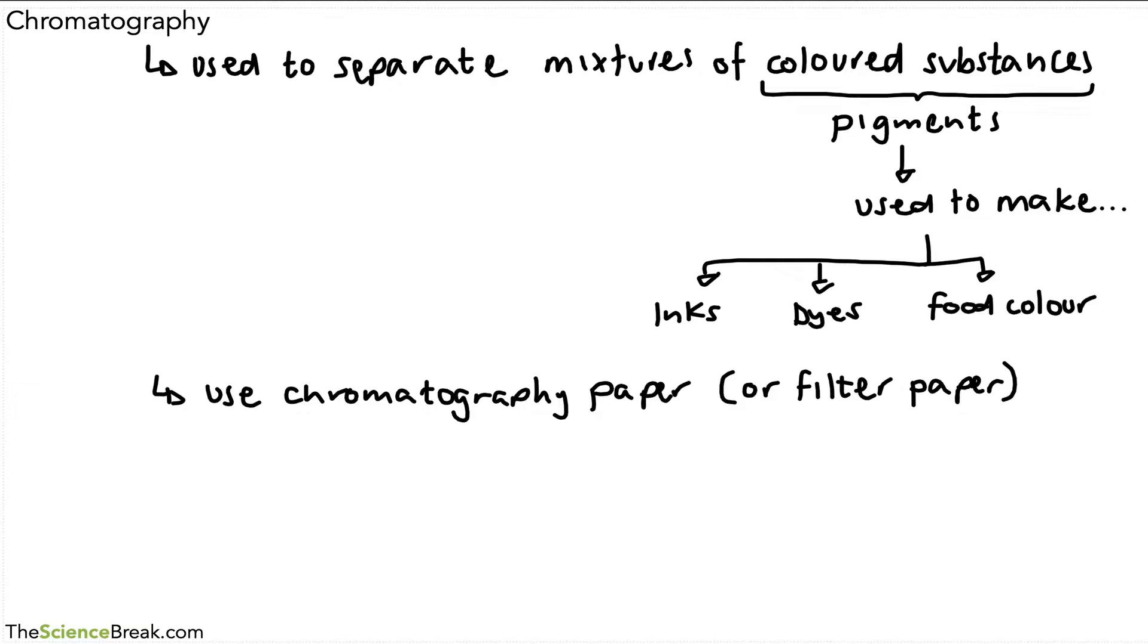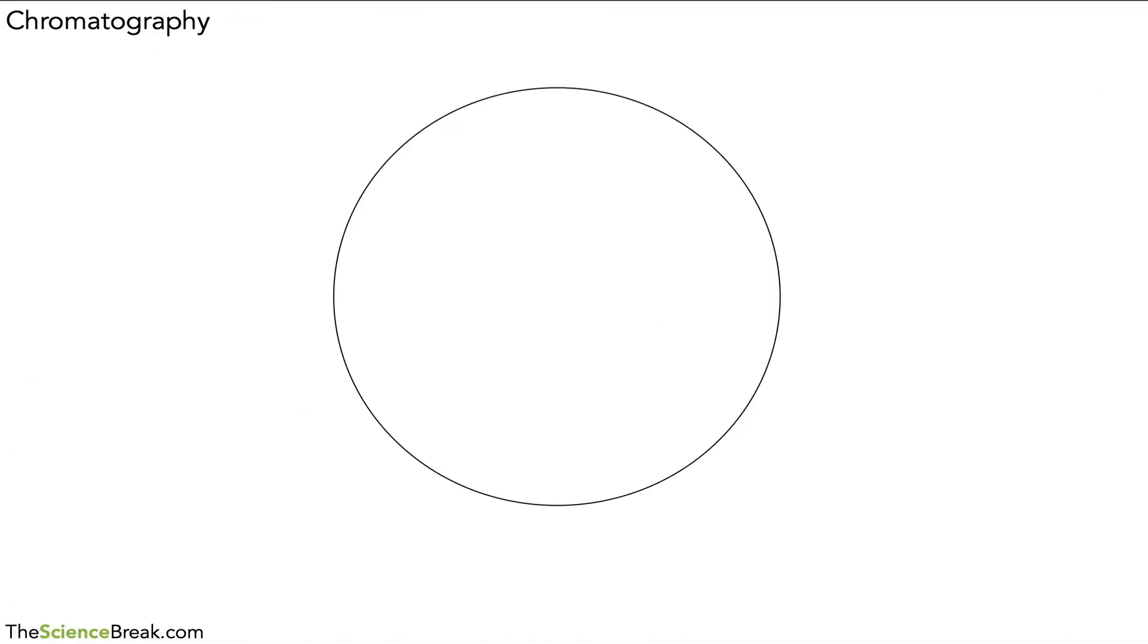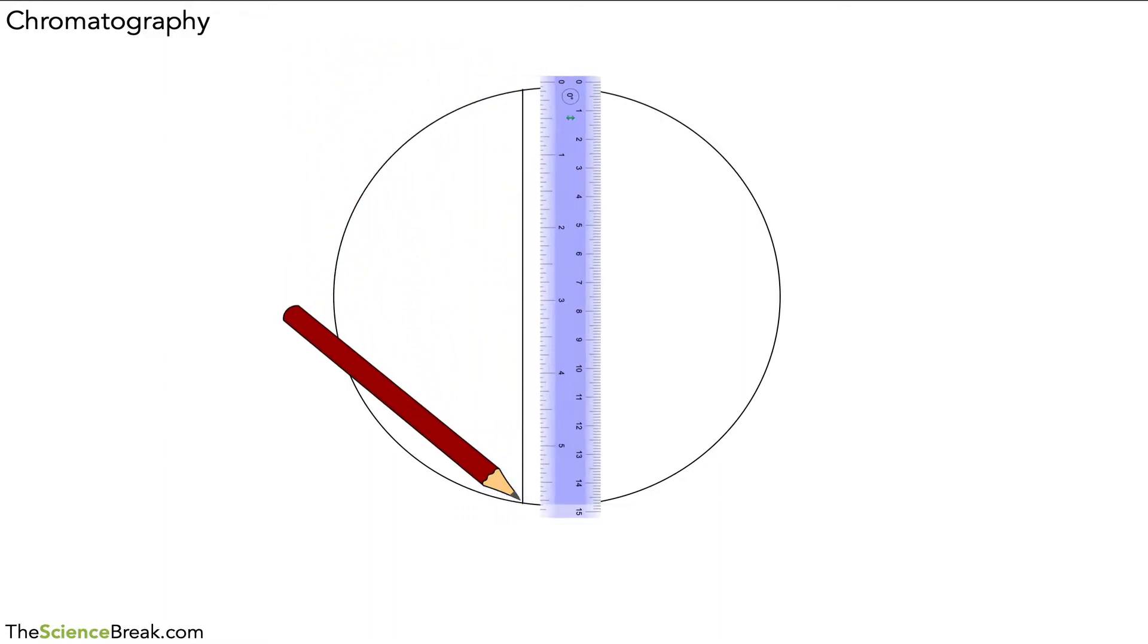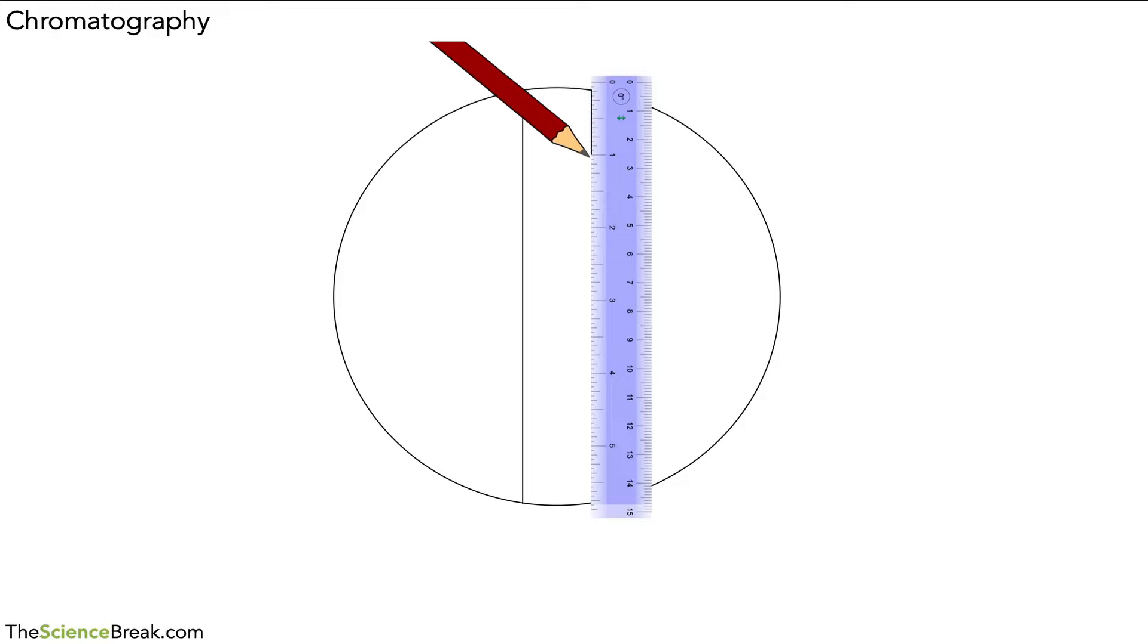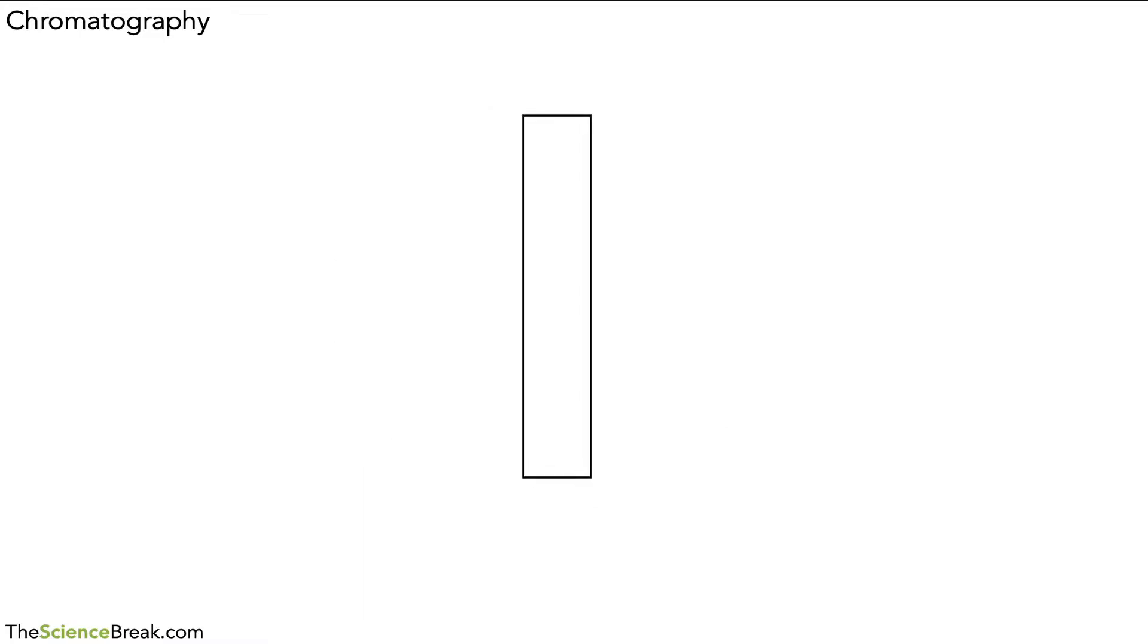First thing we can do is grab some filter paper and make a nice strip of paper that we can use for chromatography. Filter papers are usually circular, so we can just cut out a nice rectangular strip. We can mark it out with a ruler, grab some scissors, and cut it out into a nice strip. It doesn't have to be that narrow; it can be a bit wider. There we have our chromatography paper, which is made from filter paper.